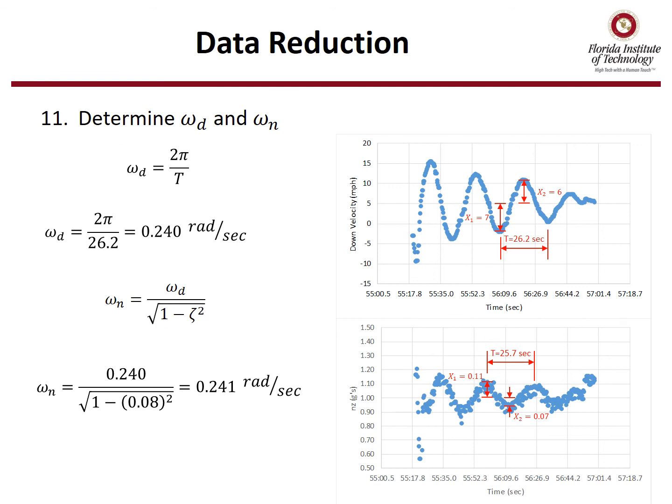Step 11, determine the damp frequency and natural frequency using the same equations as we used before, where the damp frequency is 2 pi over the period. In this case, we use 26.2 seconds for a damp frequency of 0.240 radians per second. Natural frequency is calculated using the damp frequency and the damping ratio from the previous slide, using the equation shown. And for this example, the natural frequency comes out to 0.241. And again, it's always going to be slightly bigger or bigger than the damp frequency, Omega D.